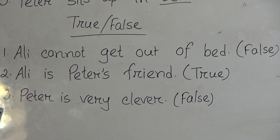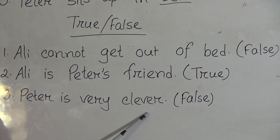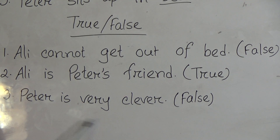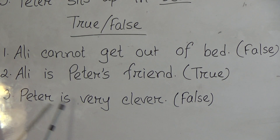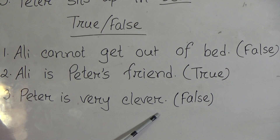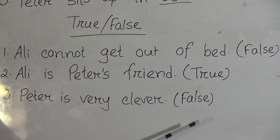Number 3: Peter is very clever. This is false. Because according to the story, Toto is very clever — Toto, a toy, a robot, is very clever. But the sentence says Peter is very clever, so this sentence is false.